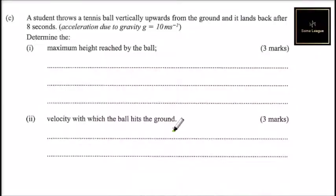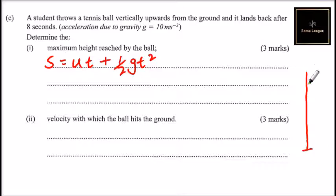Part C. A student throws a tennis ball vertically upwards from the ground and it lands back after eight seconds. Acceleration due to gravity g equals 10 meters per second squared. So determine the maximum height reached by the ball. We normally use this formula to get the distance or displacement: s equals ut plus a half gt squared because the acceleration due to gravity is represented by g.